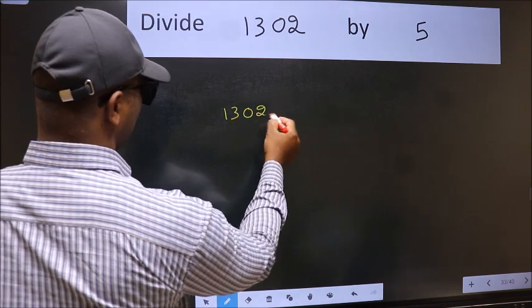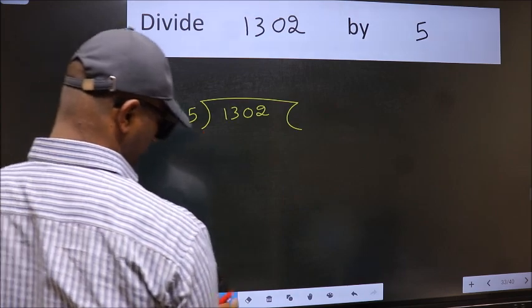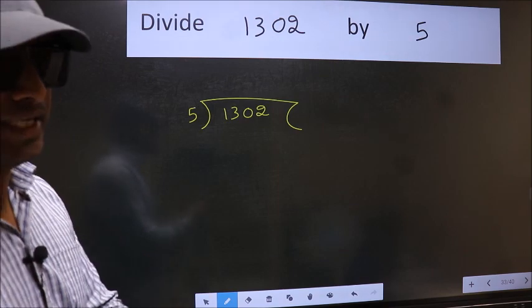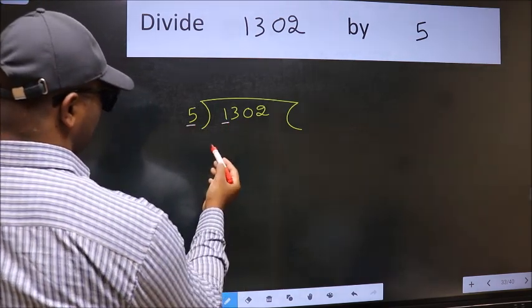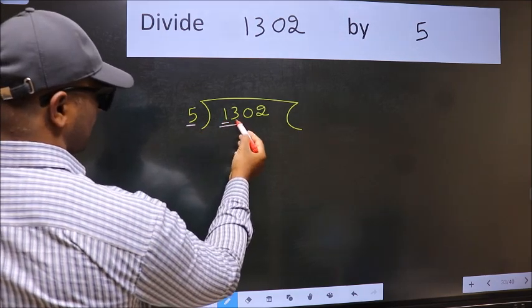1302 and 5 here. This is your step 1. Next, here we have 1 and here 5. 1 is smaller than 5, so take 2 numbers: 13.